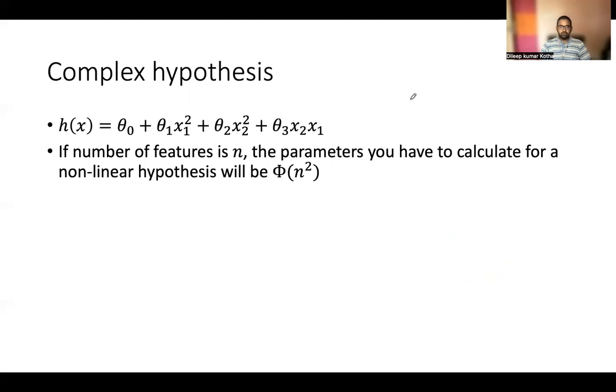For example, if you have two features, and if you take a quadratic equation as your hypothesis, the number of parameters you have to calculate is for a nonlinear hypothesis. Nonlinear hypothesis means if you have order of polynomial 2 or more than 2, it will be big O of n squared. So, having two features, it will give you n squared is 4. But if you have more features, then it will be like very much higher order polynomial.